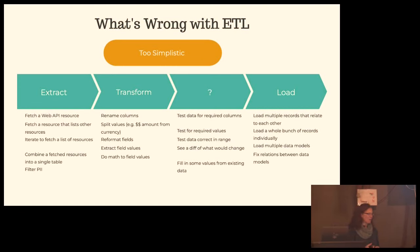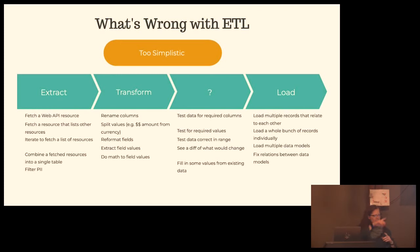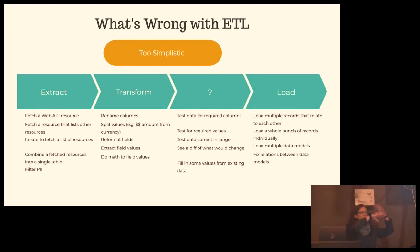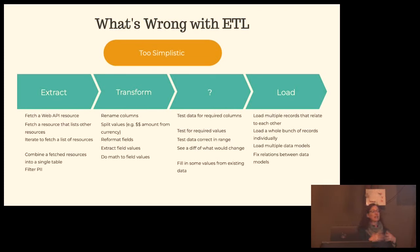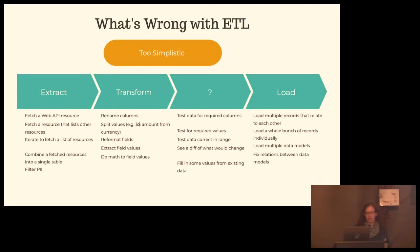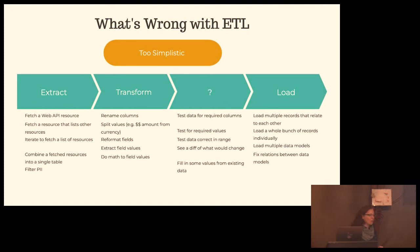Some of the steps in small print are things like renaming code. The things that don't fit into the big buckets of extract, transform, or load include things like testing your data for required columns, seeing a diff of what would change, saving a snapshot as you go — all kinds of steps that you end up doing in a complicated pipeline, and there's no really good place for them to fit.